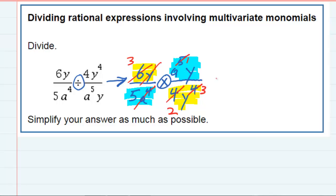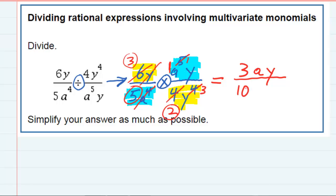Now that I'm through with my cross canceling, I'm going to multiply straight across on the top. Looking at my whole numbers, I've got 3 as the only one, so 3 times 1 gives me a 3 in the numerator. Then looking at the variables, I've still got a to the 1 and this regular y. Multiplying across the bottom, I've got whole numbers 5 and 2, which gives me 10. And the a to the fourth is cancelled, but I've still got this y cubed.